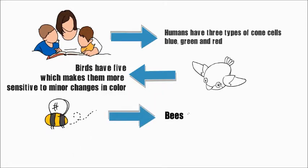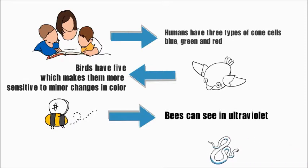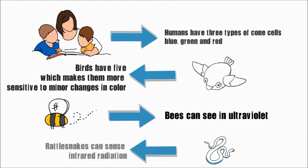However, bees can see in ultraviolet, whereas rattlesnakes can sense infrared radiation.